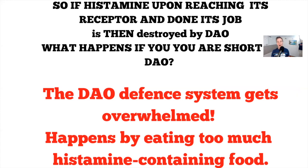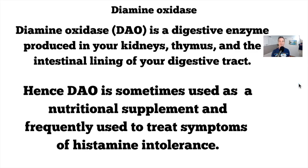What happens if you're short of DAO? The DAO defense system gets overwhelmed. This is something that's not always looked at when discussing histamine intolerance. We talk about pathogens and foods that are high or low in histamine, but many people miss this third option — looking at DAO. Why is it being overwhelmed? Why is production not enough? Is it simply that you're eating too many high-histamine foods, or is it the DAO side of the equation?